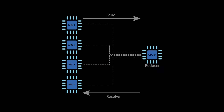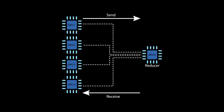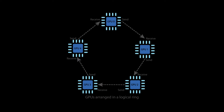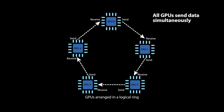Training neural networks on many GPUs is usually difficult because a common technique is to send data to one GPU, which creates a communication bottleneck. The ring all-reduce removes this bottleneck, allowing the GPUs to spend less time sending data and more time doing useful work.